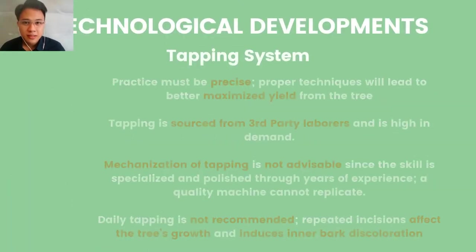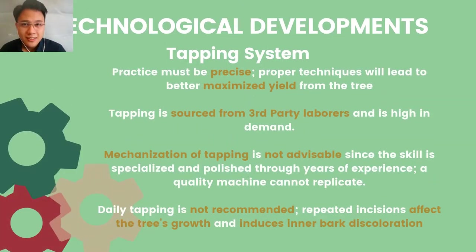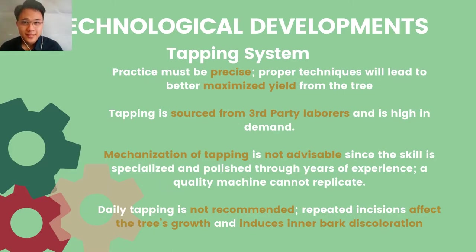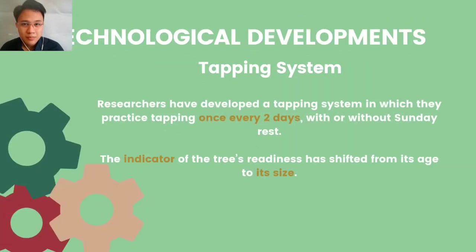For the tapping system, the practice must be precise, as proper techniques lead to better maximized yield from the tree. Tapping is sourced from third-party laborers and is currently high in demand. Mechanization of tapping is not advisable, since the skill is specialized and polished through years of experience — a quality a machine cannot replicate. Daily tapping is not recommended, as repeated incisions affect the tree's growth and induce inner bark discoloration. Researchers have developed a tapping system practicing tapping once every two days, and the indicator of a tree's readiness has shifted from its age to its size.